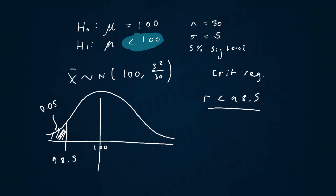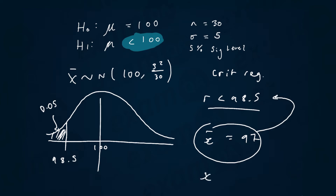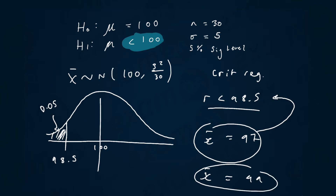Basically, if someone ran the test with a sample of 30 and got a sample mean of 97, we'd have to reject the null hypothesis because it's in the critical region. But if we got a mean of 99, that's not less than 98.5, so we'd accept the null hypothesis. That's the whole point of the critical region method.